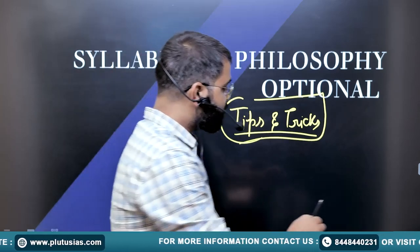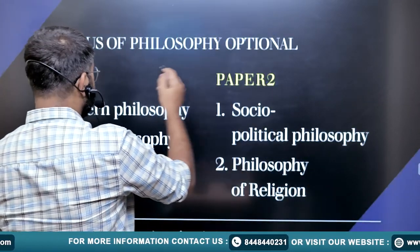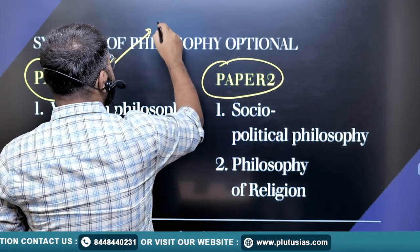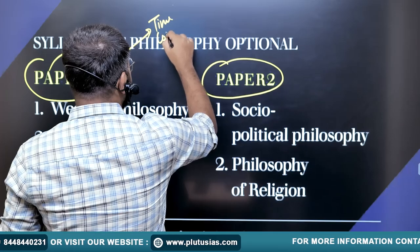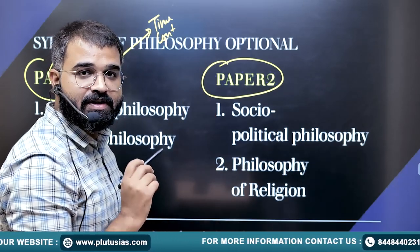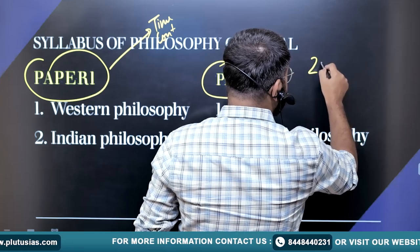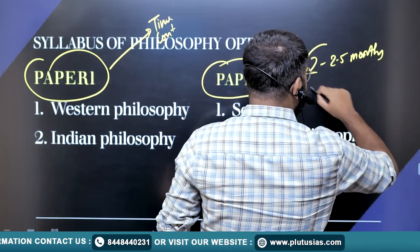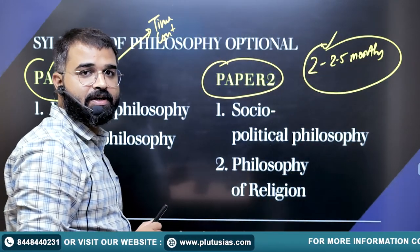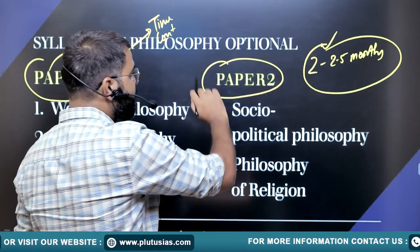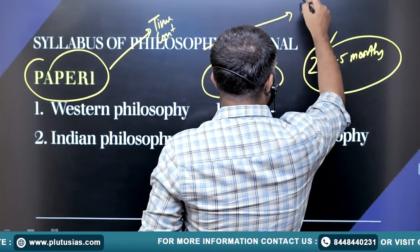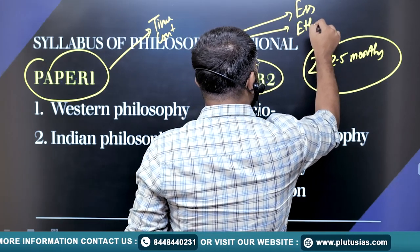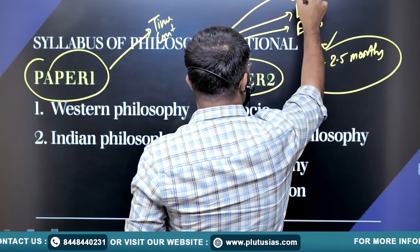Philosophy optional is a very helpful optional, especially when you are facing a time constraint during your preparation, because this syllabus can be completed in only two to 2.25 months of preparation. Philosophy optional paper will help you in essay paper, in ethics paper, along with certain help in GS paper 2 as well.